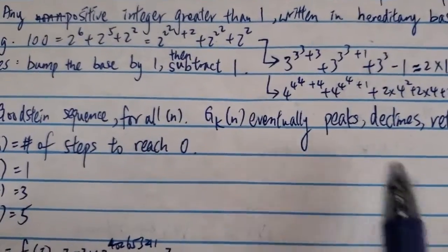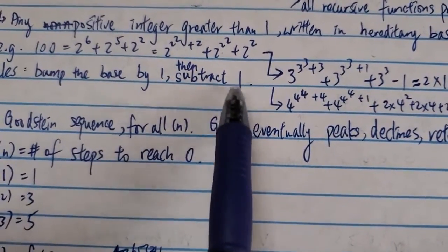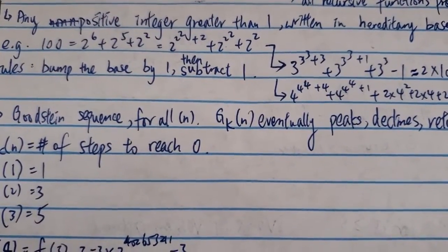And again, this is the Goodstein theorem. The key here is the thing here. Eventually, you subtract 1. If you take this away, of course, it will go on forever to infinity eventually.